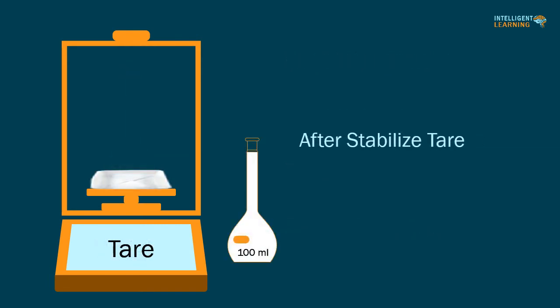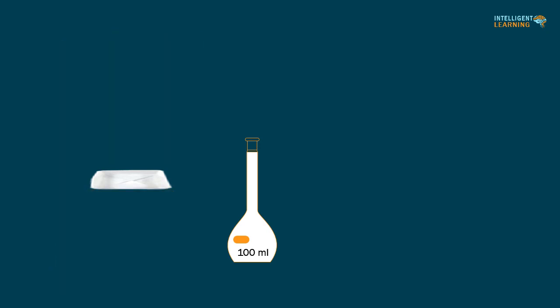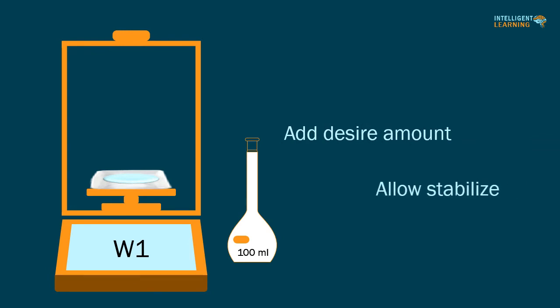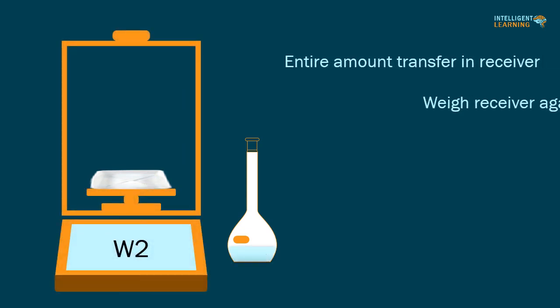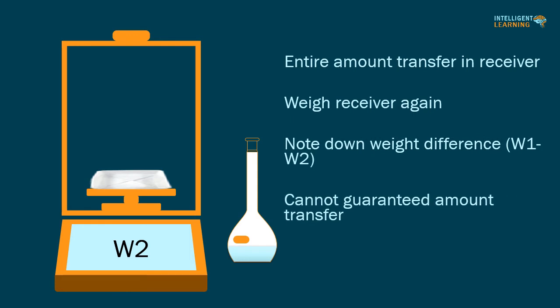This practice guarantees that the entire amount is transferred. Quantitatively transfer the material to an appropriate vessel. Alternatively, place the receiver on the balance, tare it, add the desired amount, allow the display to stabilize, record the weight, and transfer the entire amount to an appropriate vessel. Weigh the receiver again and note the weight difference for sample transfer. However, this practice cannot guarantee that the entire amount has been transferred.